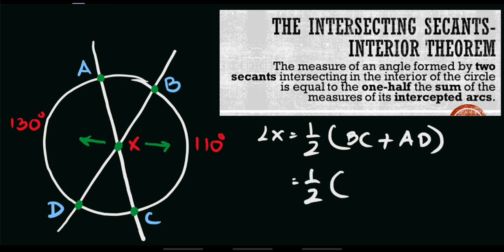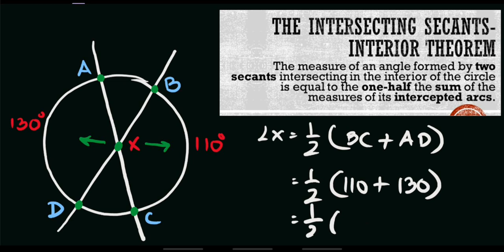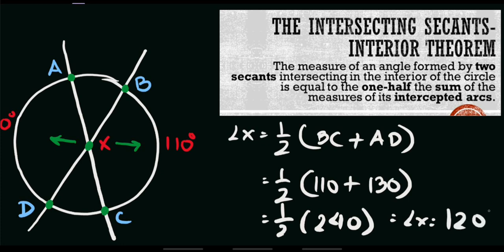Substituting the values: x equals one half of BC, which is 110 degrees, plus AD, which is 130 degrees. Simplifying, we have one half of 240 degrees, and 240 divided by 2 equals 120 degrees. Therefore, x equals 120 degrees, and that is our final answer.